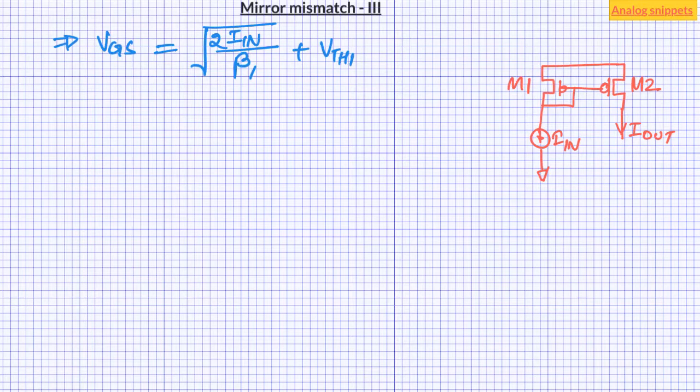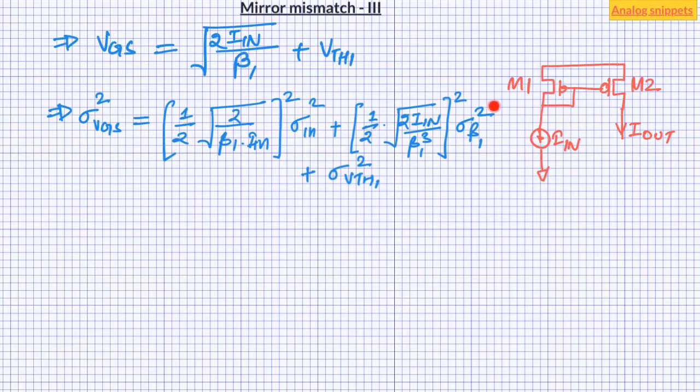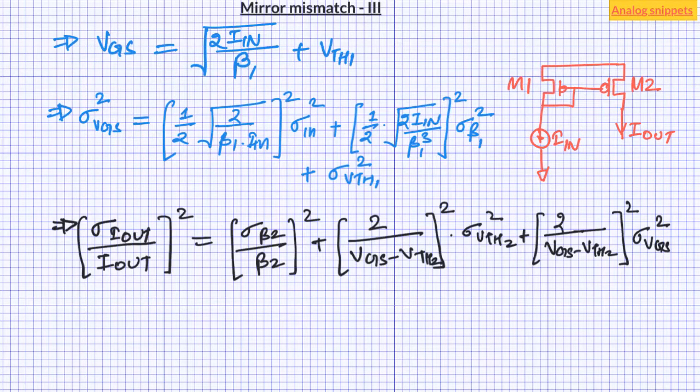So let's write the equation for the variance of V_gs again. So apart from the term of sigma_beta_1 and sigma_Vth_1 we get an additional term corresponding to the variation in input current. Now let's recall the equation of variance of I_out. So when we put sigma square V_gs into this equation and after some simplification and assuming that the threshold voltage of these two MOSFETs are nominally equal we get this form.